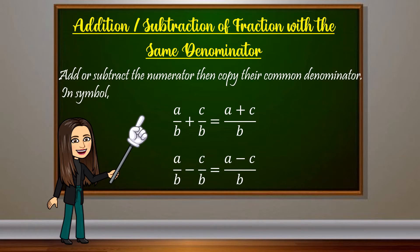Let's start with how we add and subtract fractions with the same denominators. The rule is we just simply add or subtract the numerator and then simply copy their common denominator. As you can see from the pattern, the denominators are the same, and what is done to the numerator is just simply add or subtract.